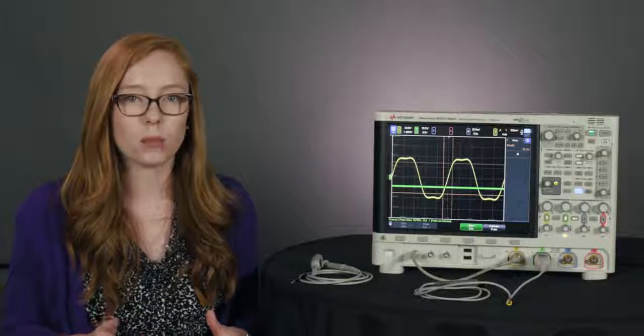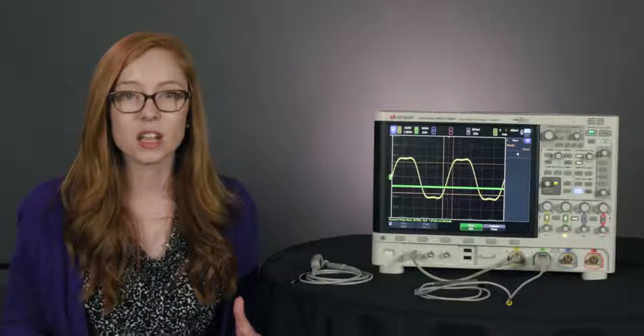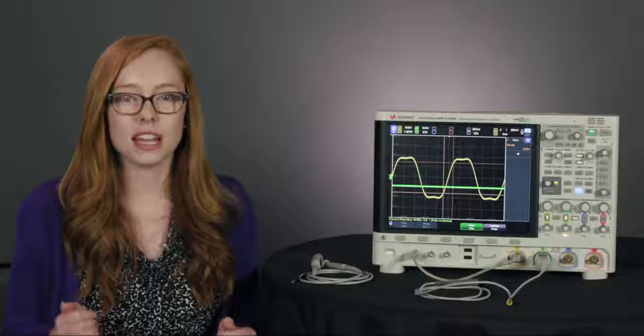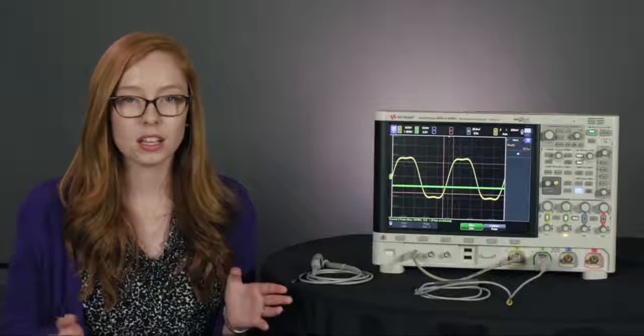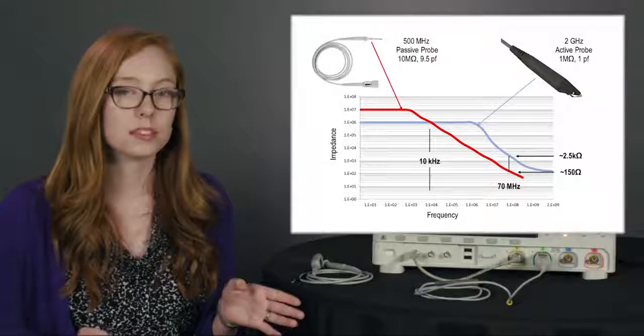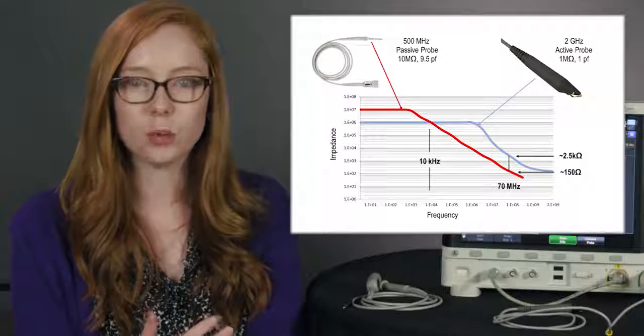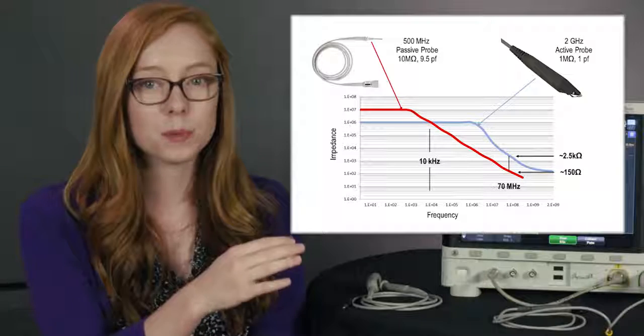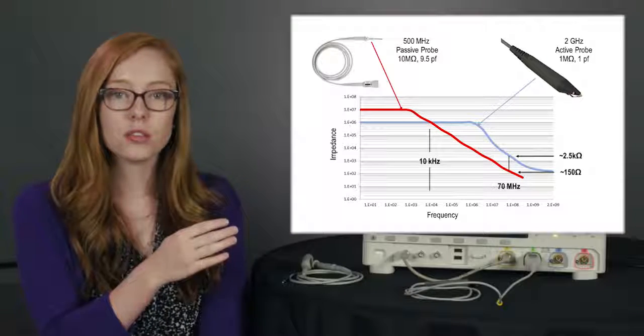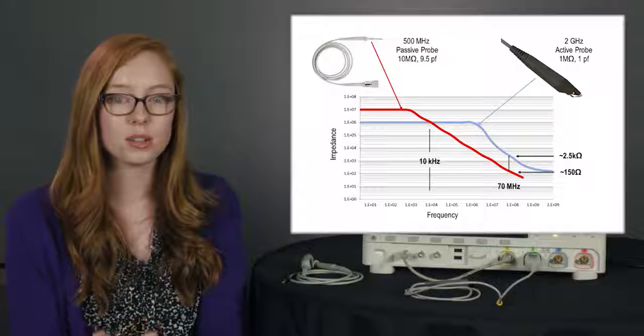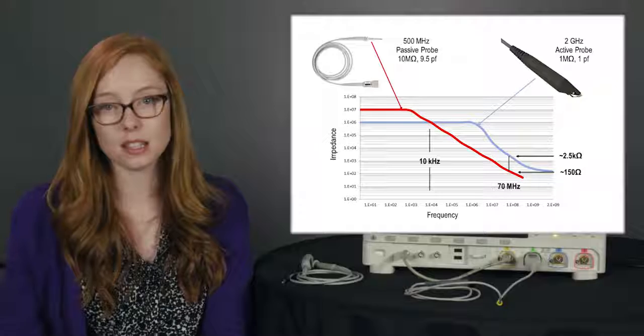Now you may see passive probes that have bandwidths even higher maybe 1 gigahertz. But as you get into these higher frequencies even if your signal does technically fall within the bandwidth range of the probe you start to see a performance degradation. And this is due to the idea that impedance and frequency are related. So on the x-axis here we have frequency and on the y-axis impedance. And if we compare a passive probe and an active probe you'll see up to a certain frequency impedance is pretty flat. But there's a crossover point at around 10 kilohertz where the passive probe starts to significantly decrease in impedance compared to the active probe.